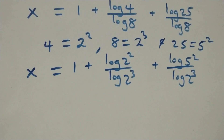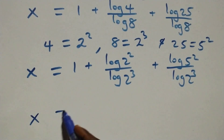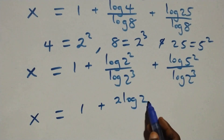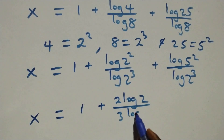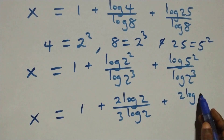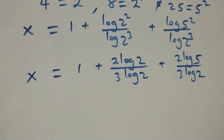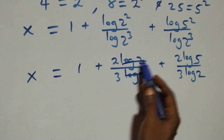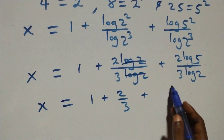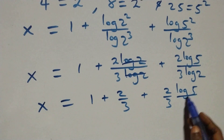We apply the power rule of logarithms: the exponents come down, giving x equals 1 plus (2 log 2) over (3 log 2) plus (2 log 5) over (3 log 2). Then log 2 cancels in the first fraction, so this becomes x equals 1 plus 2 over 3 plus (2 over 3) times (log 5 over log 2).